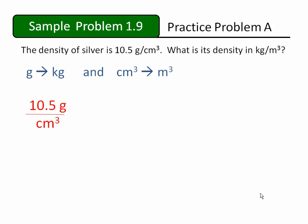We'll begin with the given density. The unit of volume is in the denominator of this value. 10.5 grams occupy a volume of one cubic centimeter.